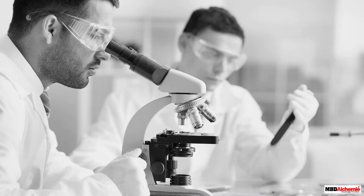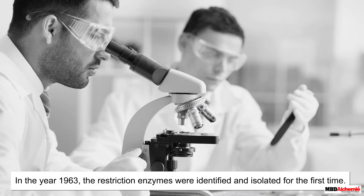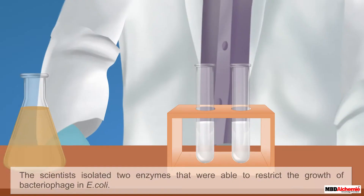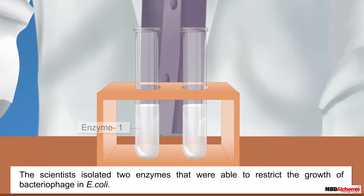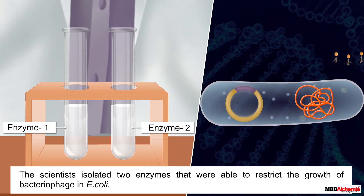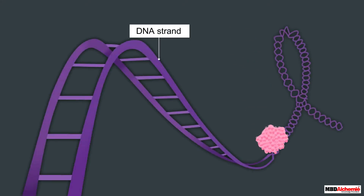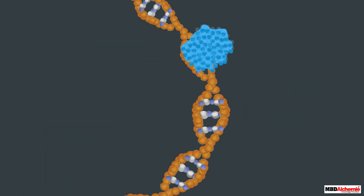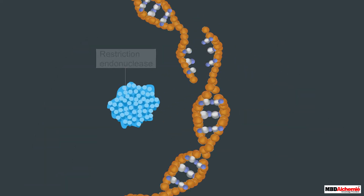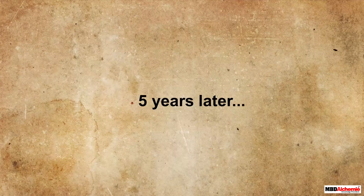Going back to the history of Restriction Enzymes, it was in the year 1963 that these enzymes were identified and isolated for the first time. The scientists isolated two enzymes that were able to restrict the growth of bacteriophage in E. coli. One of the two enzymes added a methyl group to the DNA.